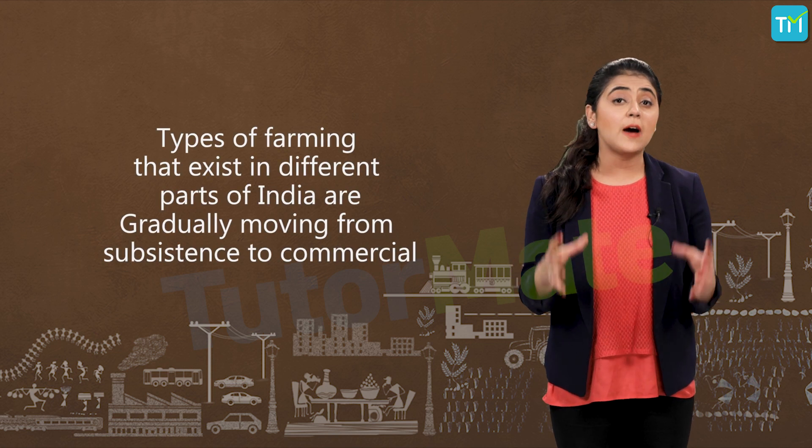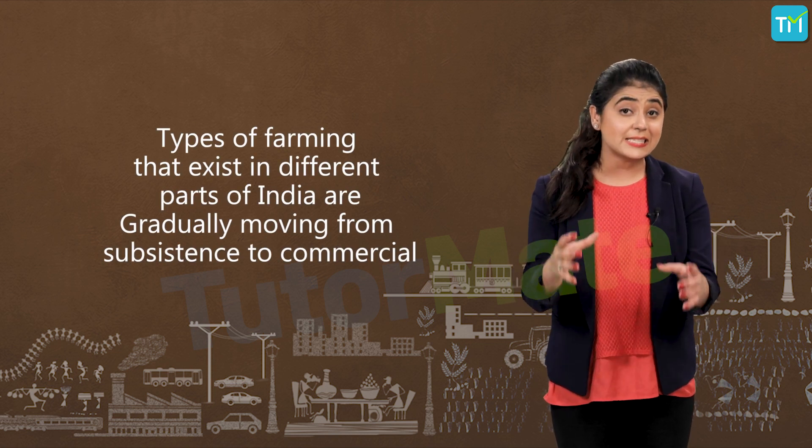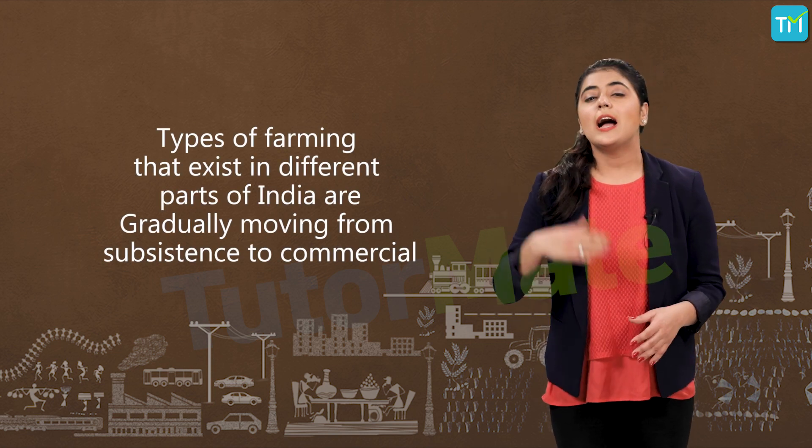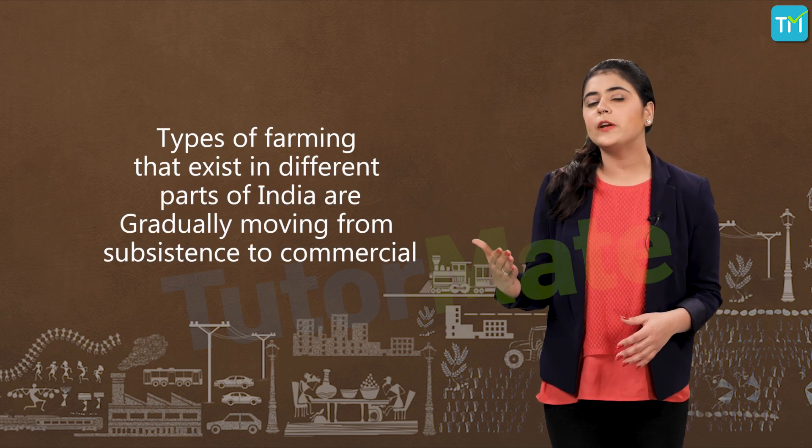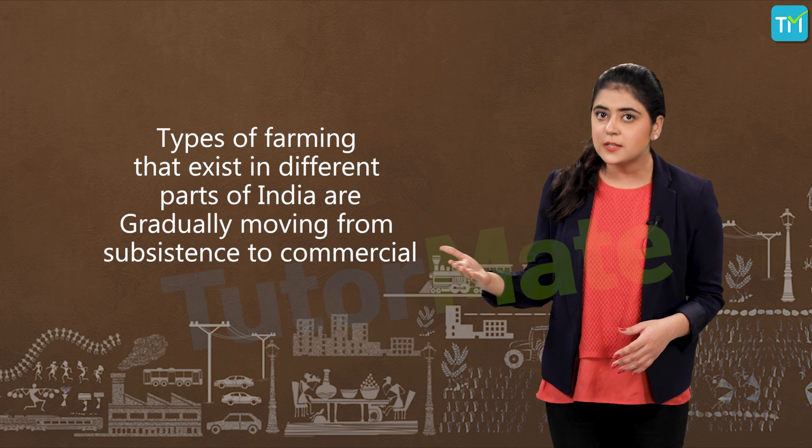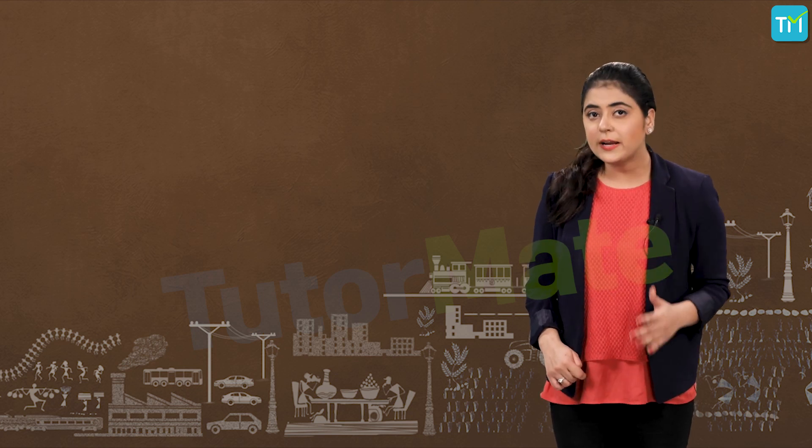Another interesting fact is that the types of farming that exist in different parts of India are gradually moving from subsistence to commercial. That's four down: primitive subsistence farming, shifting agriculture, intensive subsistence farming and commercial farming.